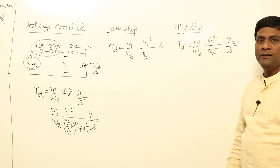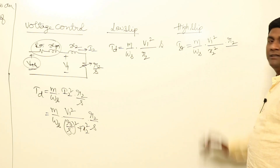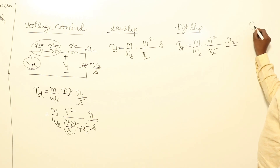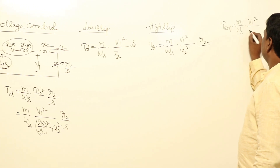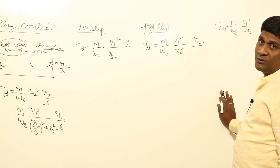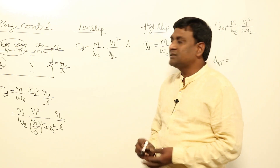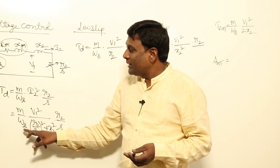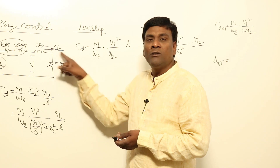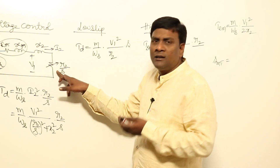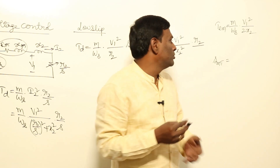For starting torque, slip is 1. Maximum torque Tm equals M by omega_S into V1² by 2X2. The slip at which maximum torque occurs: since omega_S is constant, for TD to be maximum, PG must be maximum — meaning power absorbed by resistance is maximum. Applying maximum power transfer theorem, R2/S_MT equals X2, so S_MT equals R2 by X2.